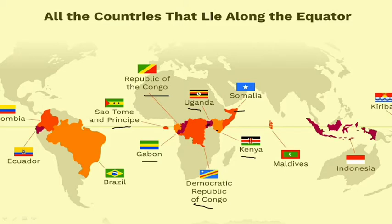In the eastern part, there are another three countries passed by the equator: Kiribati, Indonesia, and Maldives. These are the countries that lie along the equator in the eastern region.